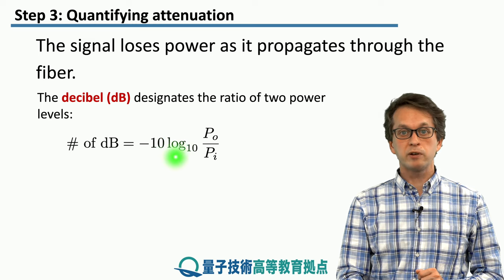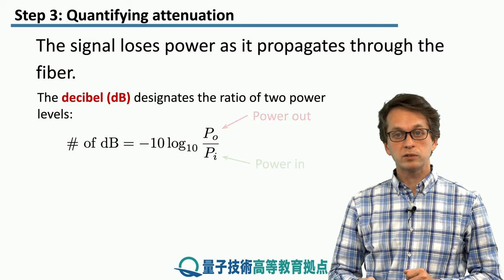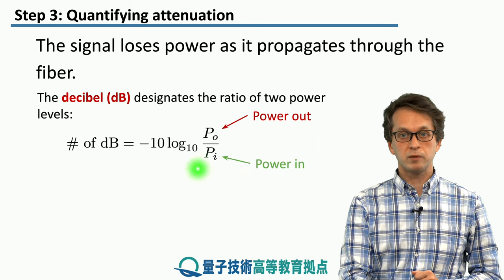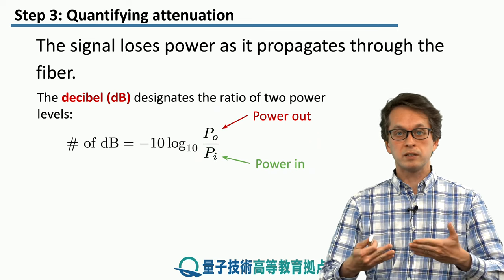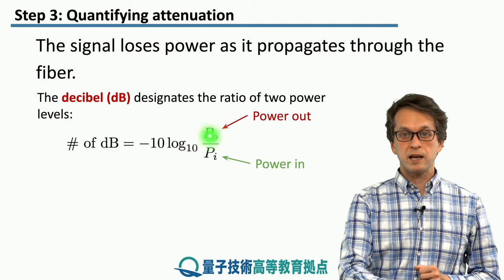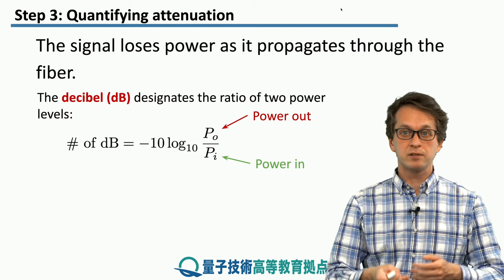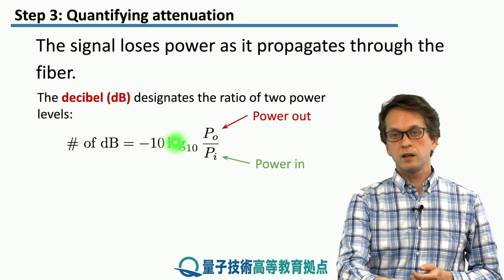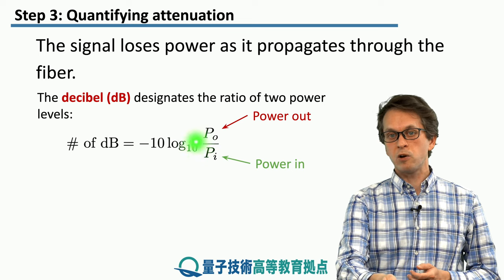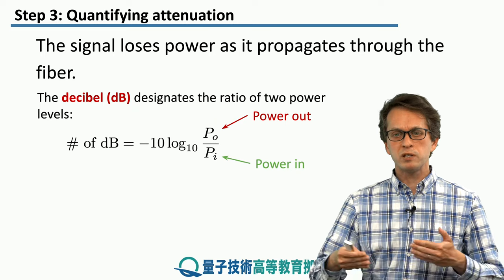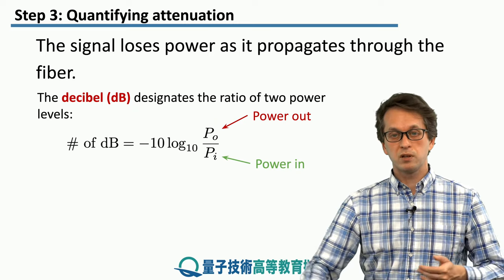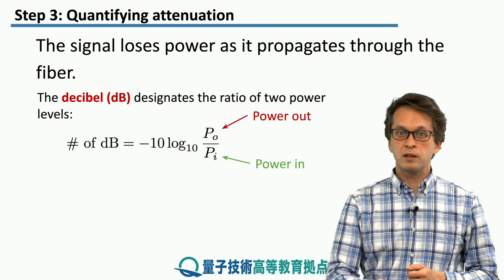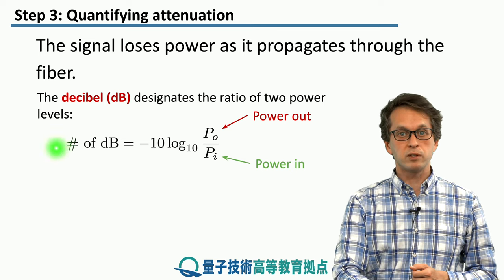The number of decibels is defined as: minus 10 times the logarithm base 10 of the ratio of power out to power in. The minus sign is there because this ratio is less than 1 — the power out has to be less than power in because the signal is getting attenuated. The factor of 10 is there because we are talking about decibels, where 'deci' means 10, setting the overall scale. The logarithm is used because we will be considering a large span of orders of magnitude between power in and power out, and the logarithm produces a convenient scale for the number of decibels.